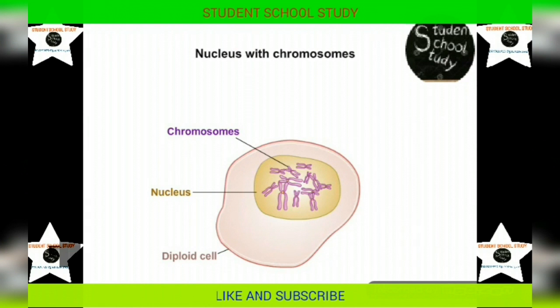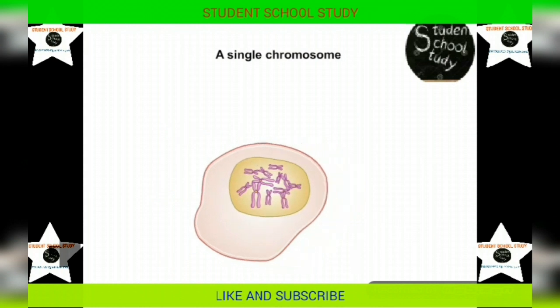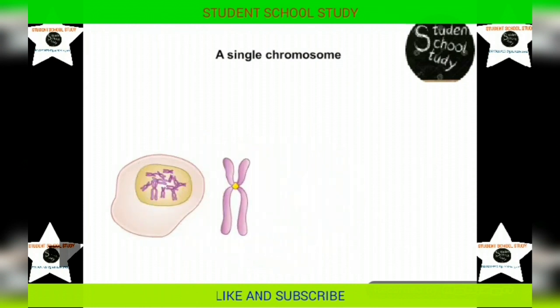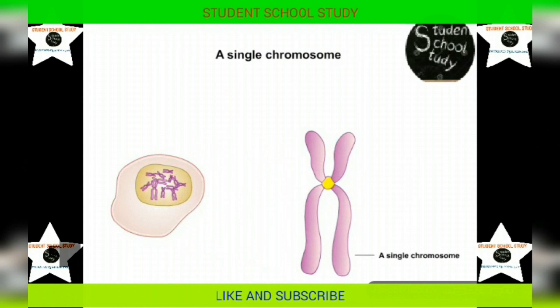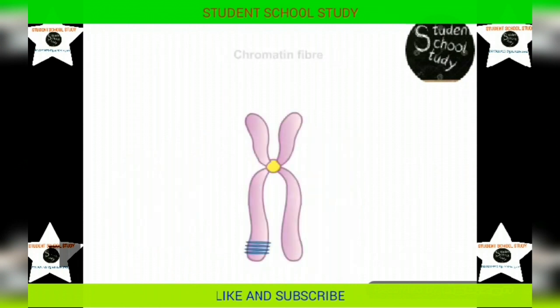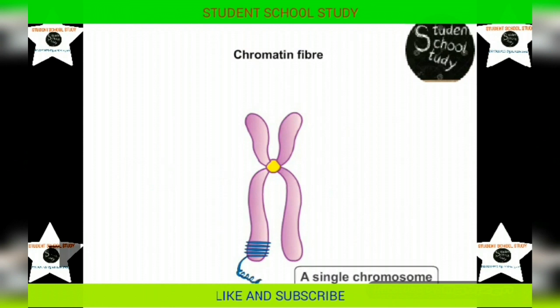You can see that the nucleus has structures called chromosomes. This is a single chromosome, enlarged for better viewing. What is it made up of? If you start uncoiling a chromosome, it will show you finer chromatin fibers. Chromatin fibers roll up with proteins to form a chromosome. Each chromosome is made up of a single chromatin fiber.